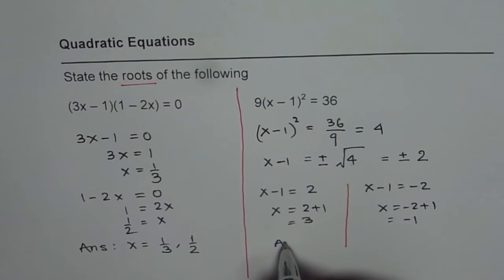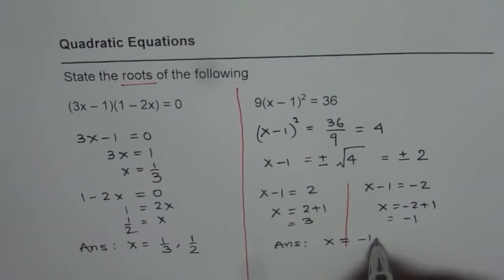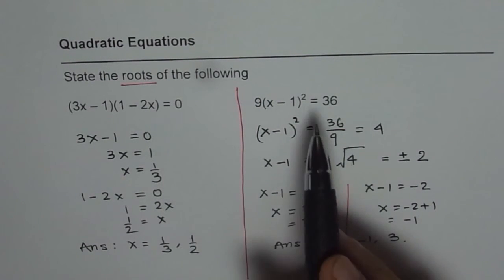And therefore, our answer is x equals either minus 1 or 3. So that is how you can solve a quadratic equation when given in vertex form, this kind of vertex form.